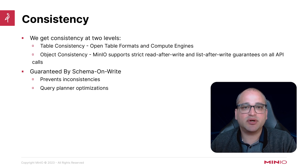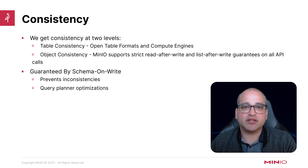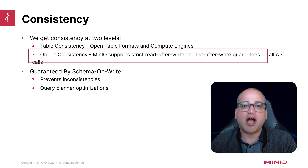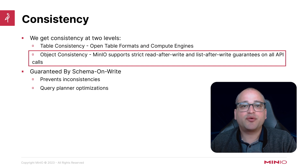Consistency gives us the ability to enforce schema on write on data inside our tables. This allows us to be confident that our compute engine will refuse to make an update in the event that it might violate some constraints we previously defined. We get support for strong consistency from MinIO and Iceberg at the object and table level respectively. At the table level, our compute engine will use our catalog and Iceberg to enforce things like schemas, key constraints, and data types, making sure these are never violated. At the object level, MinIO gives us support for strong consistency through its strict read-after-write and list-after-write guarantees on all API calls to retrieve or modify data.